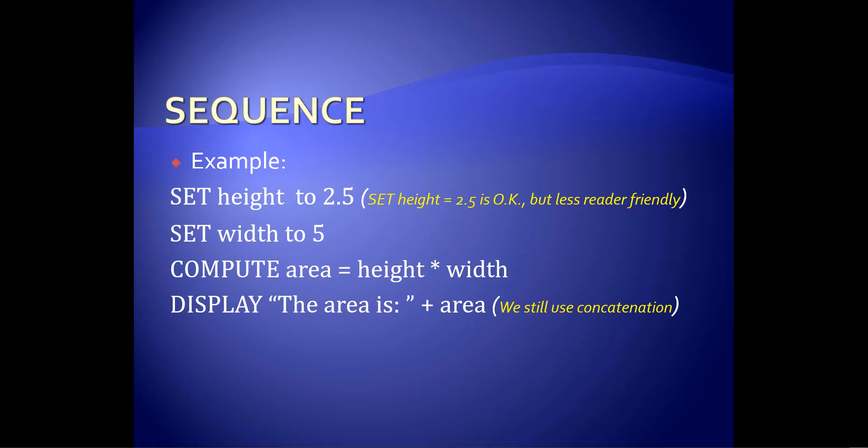Down below where you see the display, display, the area is plus area. Notice that we still use concatenation. So when you want to append a variable inside of your output, we need to break up what is actually text and what is actually variables. And we do use standard rules for concatenation so everybody reading this code will actually understand. Now, if I were to hand you a piece of paper with this code on here, it would be your job to then convert this logic into code.